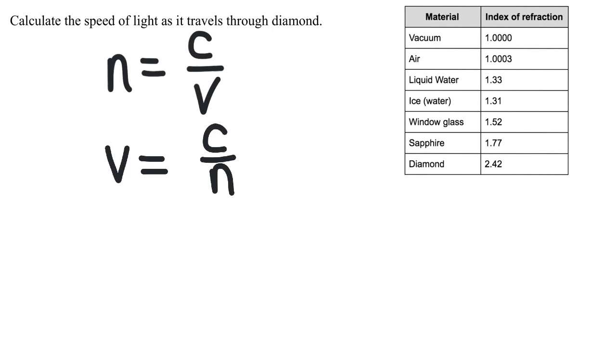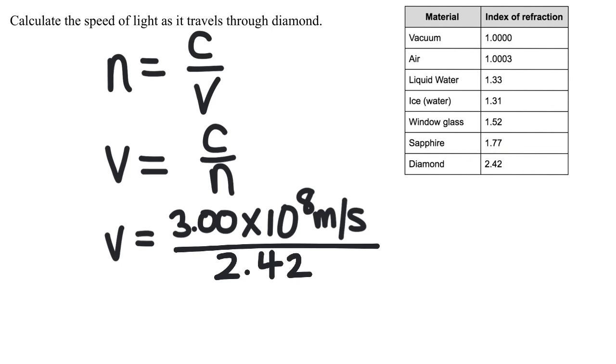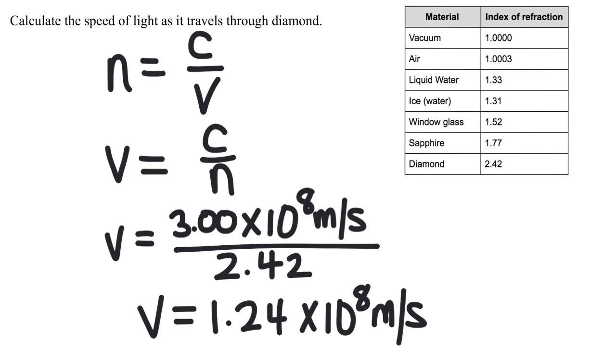We plug in the value for the speed of light, 3 times 10 to the 8, and then we can look in our chart, find the index of refraction for diamond. That's right here, 2.42. We plug that into the equation. When we do the calculation, we end up with 1.24 times 10 to the 8 meters per second.